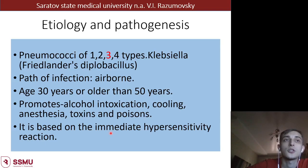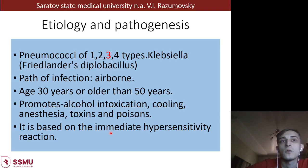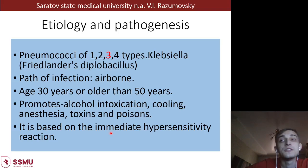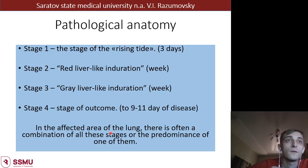The typical age of manifestation is middle age, around 30 to 50 years old. Factors which may promote infection are alcohol intoxication, cooling, anesthesia, toxins and poisonings. The disease is based on immediate hypersensitivity reaction, and development of all pathological processes is associated with a hypersensitivity reaction or protective reaction of the organism against infection.